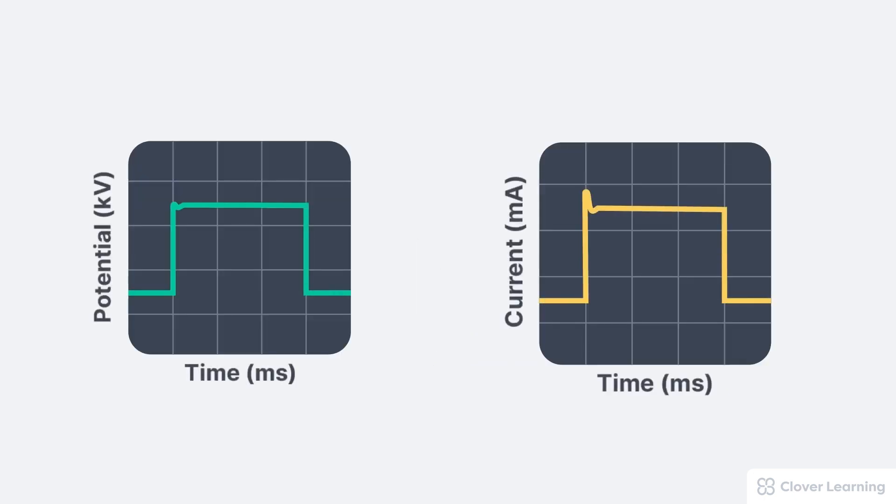So how do we know that the x-ray machine is actually generating the selected technical parameters during the exposure? One way is to measure the KV and MA waveforms. These waveforms are visual representations of the actual MA and KVP applied to the x-ray system during the exposure.